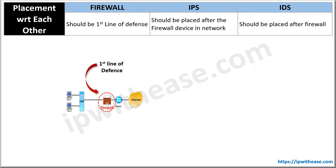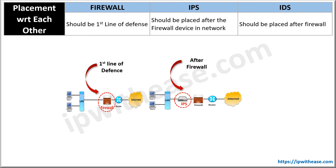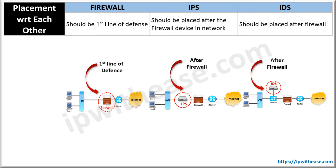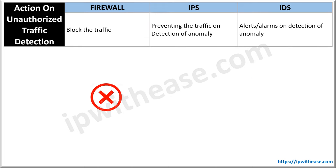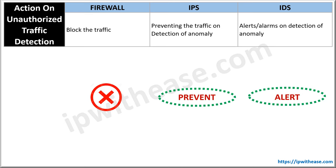Firewall is always the first line of defense, and IPS should be placed after the firewall. IDS should also analyze traffic after the firewall. When it comes to action taken on detection of unauthorized traffic, the firewall simply blocks the traffic from entering, and IPS does the same. However, IDS will not prevent the traffic from entering the network — it only sends an alert to the concerned administrator.